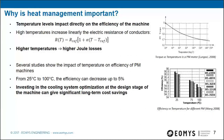Heat management is also very important for efficiency. Joule losses, due to electric current in conductors, are directly related to the electric resistance of the material, and resistance increases with temperature — so higher temperatures mean higher losses. For PM machines, studies show that increasing temperature can decrease efficiency by up to 5%. Investing in cooling system optimization at the design stage can give significant long-term cost savings.